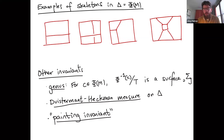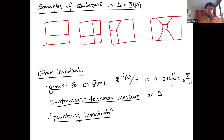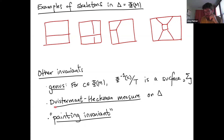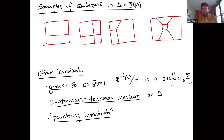There are three other invariants. One is the genus: since we're in a tall space, symplectic reduction at any level always gives a surface, and all those surfaces have the same genus. There's also the Duistermaat-Heckman measure — a measure on the moment image, essentially the pushforward of the symplectic volume — which must be compatible with the skeleton in a certain way. And there's the painting invariant, which I'll discuss next.